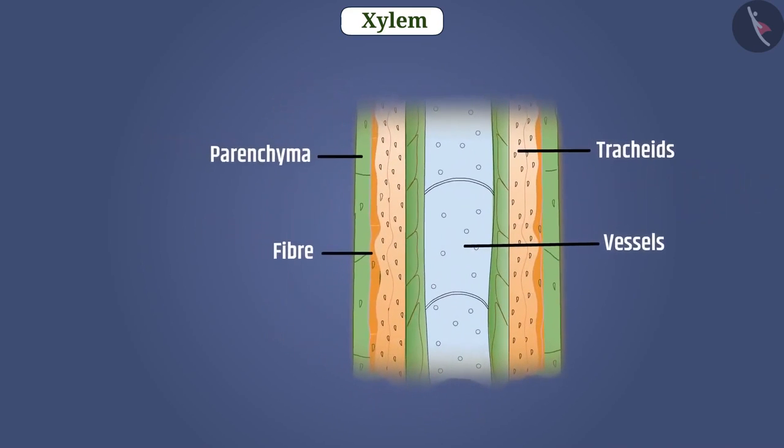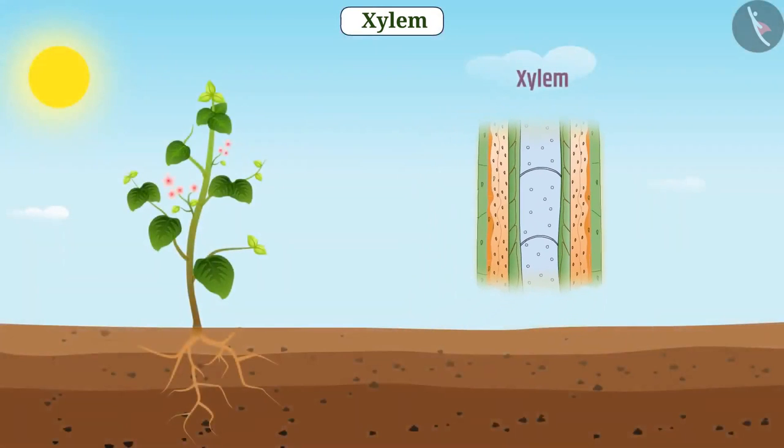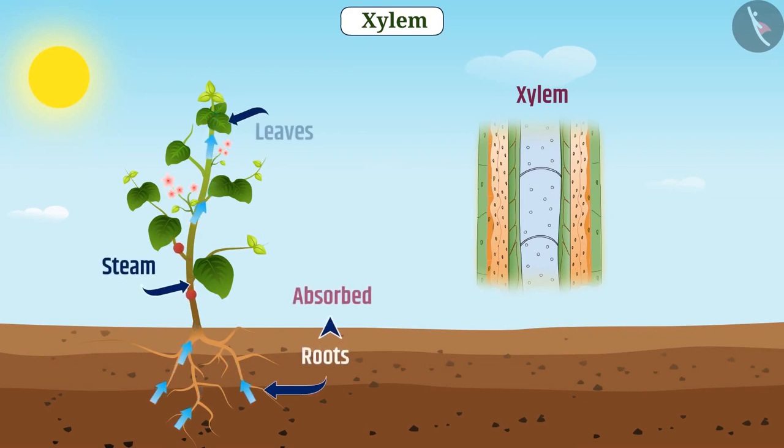The wall of xylem parenchyma is thin and is made up of cellulose. Xylem parenchyma stores food. The cell wall of xylem fiber is thick and they mainly serve to provide mechanical support to the plant. Xylem transports minerals, salts, and water absorbed by roots to the stem and leaves.